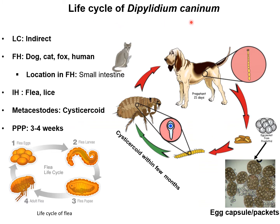The life cycle of Dipylidium caninum is indirect. The final host is dog, cat, fox, and occasionally human, and the parasite is located in the small intestine. The intermediate host is the dog flea and lice found in the body coat of the dog. The infective stage is the cysticercoid, and the time required for completion of this life cycle is around three to four weeks.